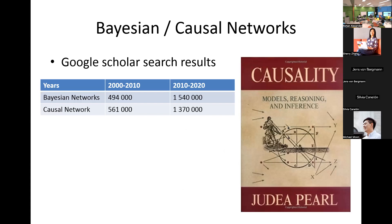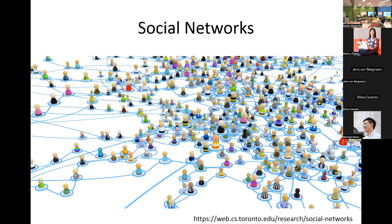This is just to show that causal networks and Bayesian networks have been increasing in popularity over the years. I did some Google Scholar searches: from 2000 to 2010, there were about half a million hits, and from 2010 to 2020 it's up to 1.5 million — so the publication rate roughly tripled. I put Judea Pearl's book up here because that was my first exposure to these networks, and he is a pioneer of causal networks. So if you want to get into it, you can read his comprehensive — and difficult — book as an introduction.